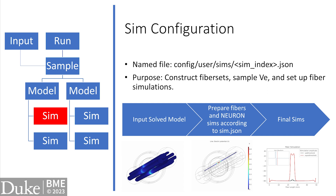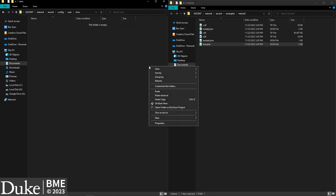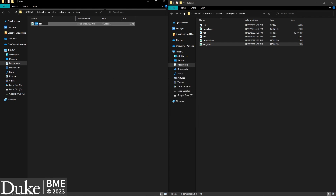Now that our model is set up, we need to set up our sim configuration. A sim configuration file defines the parameters for simulating nerve fibers in Neuron. These simulations use biophysical, multi-compartment models of nerve fibers, also called axons. The sim.json file defines how fibers are populated within the nerve, as well as what parameters we'll use to stimulate the fibers. Extracellular potentials are sampled from the COMSOL finite element model in the sim stage, and applied to a biophysical cable model of an axon using the specified fiber model, fiber diameter, and stimulation waveform. Copy this sim.json file from the tutorial directory into config/user/sims and rename it with a unique index — I'll rename it to 0.json.